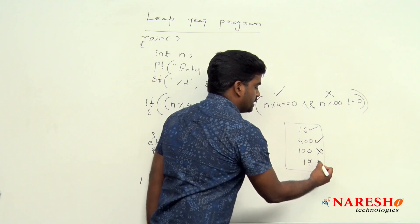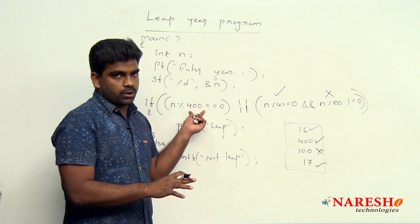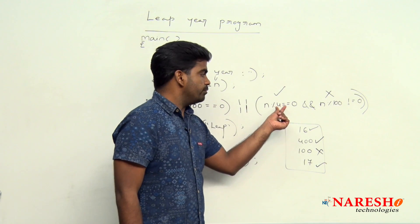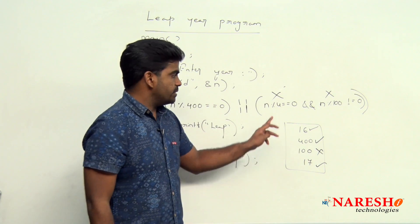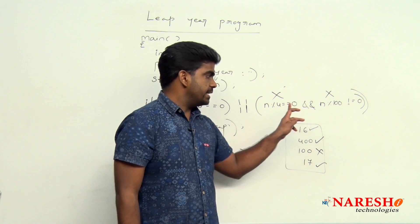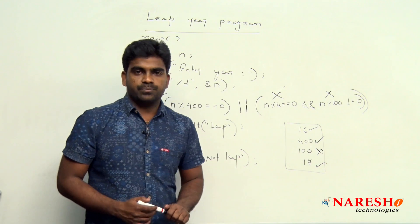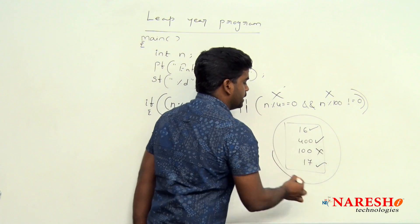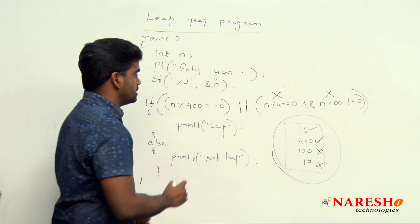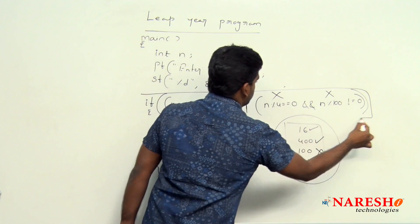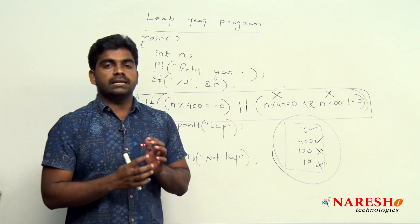Finally, come to 17. 17 % 400 — cannot divide. 17 % 4 == 0 — condition false. For the AND operator, if the first is false it directly gives false. So the output is: not a leap year. The first two inputs — 16 and 400 — come under leap years; the next two — 100 and 17 — come under not leap years. This is the simple condition to test whether an input year is a leap year or not.